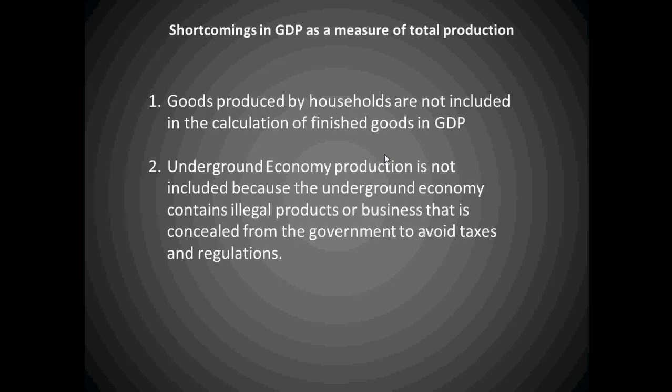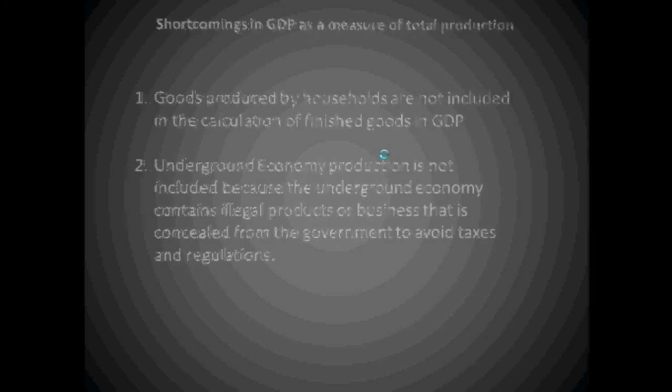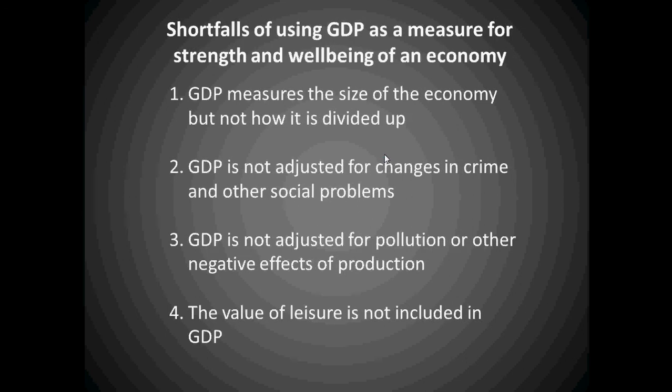Shortfalls of using gross domestic product as a measure for strength and well-being of an economy: four factors are important to keep in mind. Gross domestic product measures the size of the economy but not how it is divided up. GDP is not adjusted for changes in crime and other social problems. GDP is not adjusted for pollution or other negative effects of production. The value of leisure is not included in GDP.